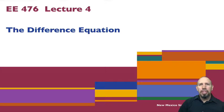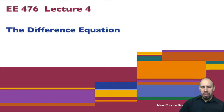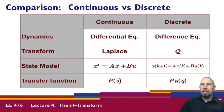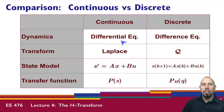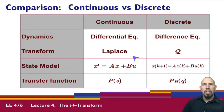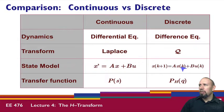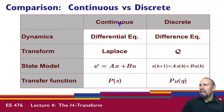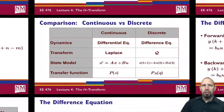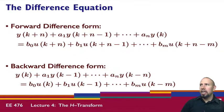We're now going to look at another representation called the difference equation, which is a way of representing a system. Comparing continuous time with discrete time: continuous time dynamics are described by differential equations, discrete time by difference equations. The main transform for continuous time is the Laplace transform; for discrete time it's the Q transform. For transfer functions, we have P of S for continuous time and P subscript H of Q for our discrete time transfer function.